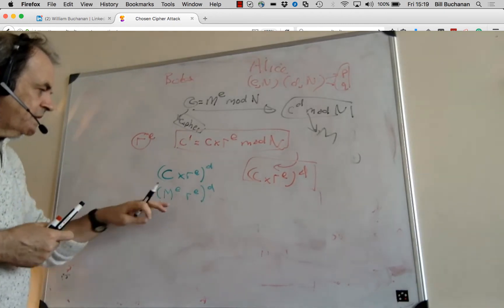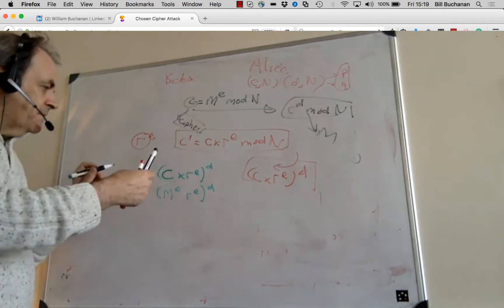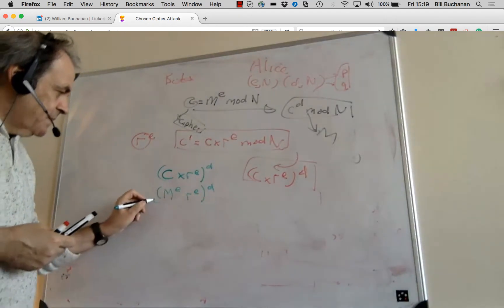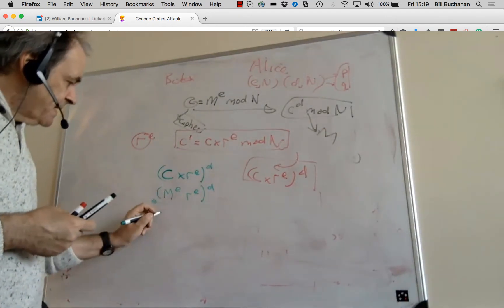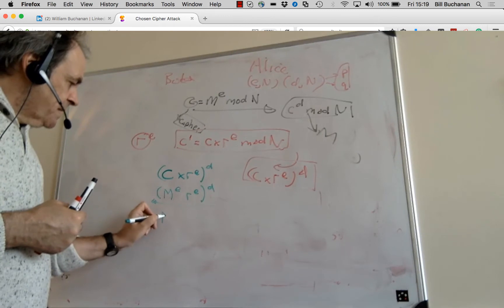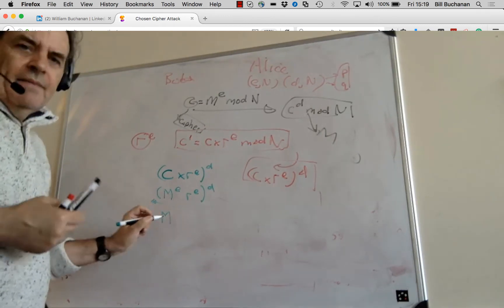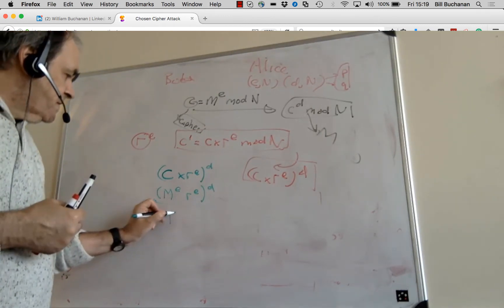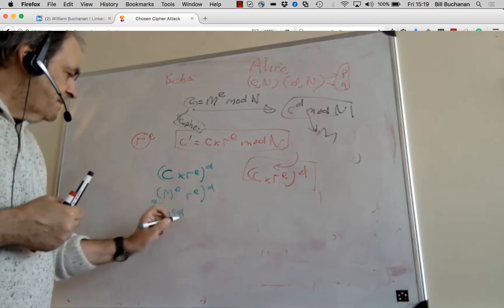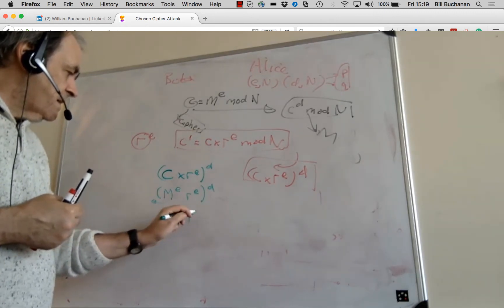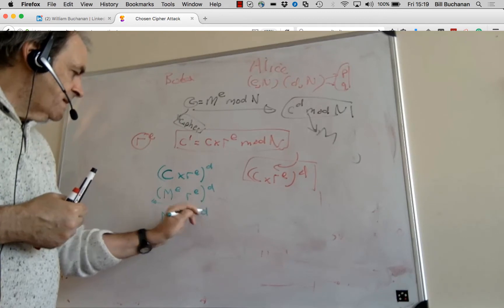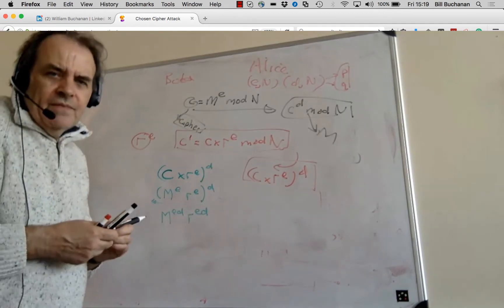So that's the message that he will get coming back. So we now have M to the E to the power of D there, and R to the power of D there.